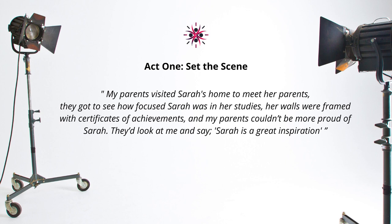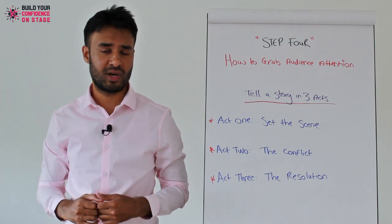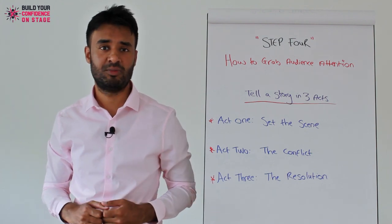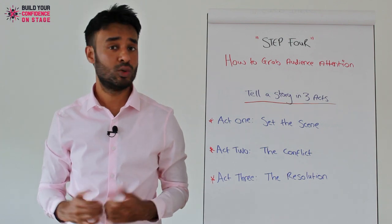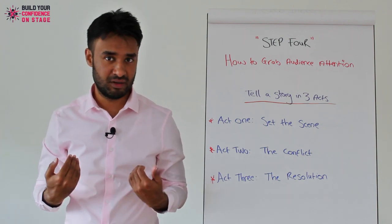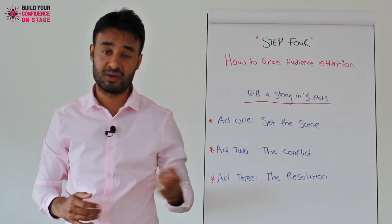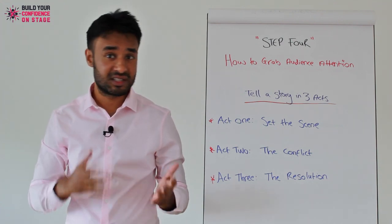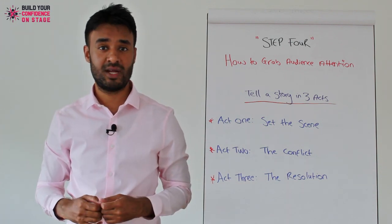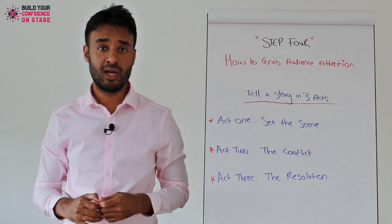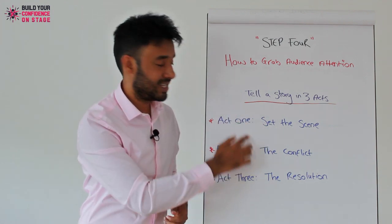My parents couldn't be more proud of Sarah. They'd look at me and say Sarah is a great inspiration. When you look at Act 1, there are a few things you are able to instantly spot when it comes to people, place, things and time. People who are involved in the story: myself, Sarah and my parents. Place: Sarah's home. Things: the certificates on her wall. And time: she's my childhood best friend. So that sets the tone for the first part of the story, which is setting the scene.